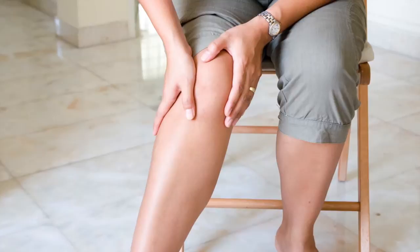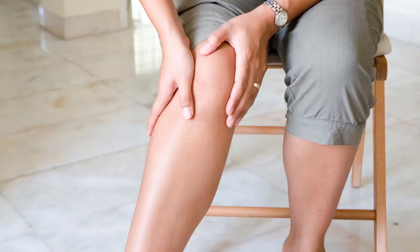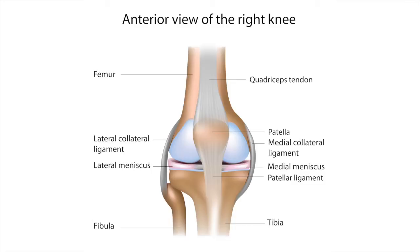If the cartilage fragment remains attached and in its original position, you may not feel much pain. If, however, the fragment becomes detached, it can become caught between the articulating surfaces of the joint and cause pain, swelling, weakness, decreased range of motion, or even joint locking. This is a rare condition, but it can cause serious problems.